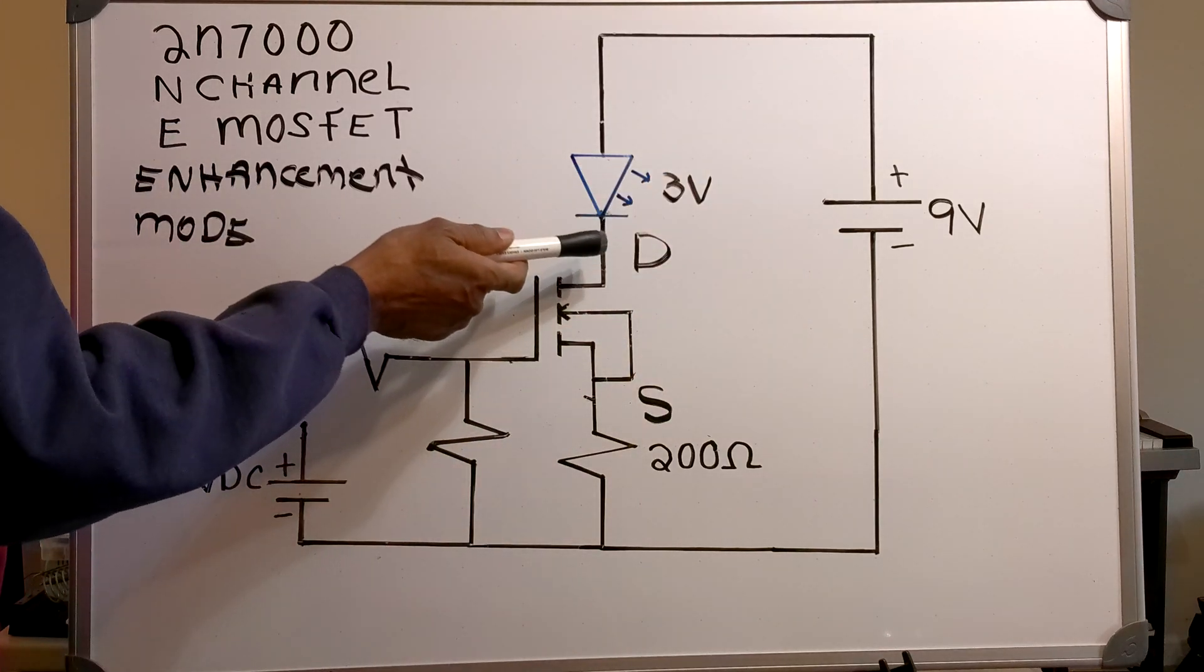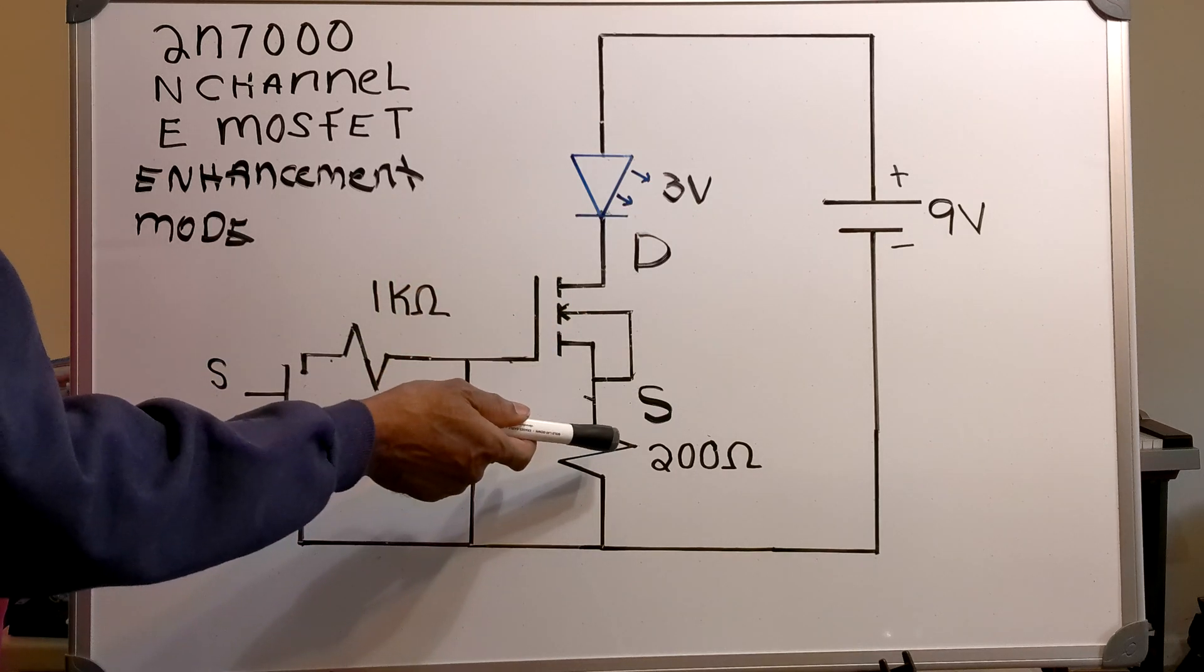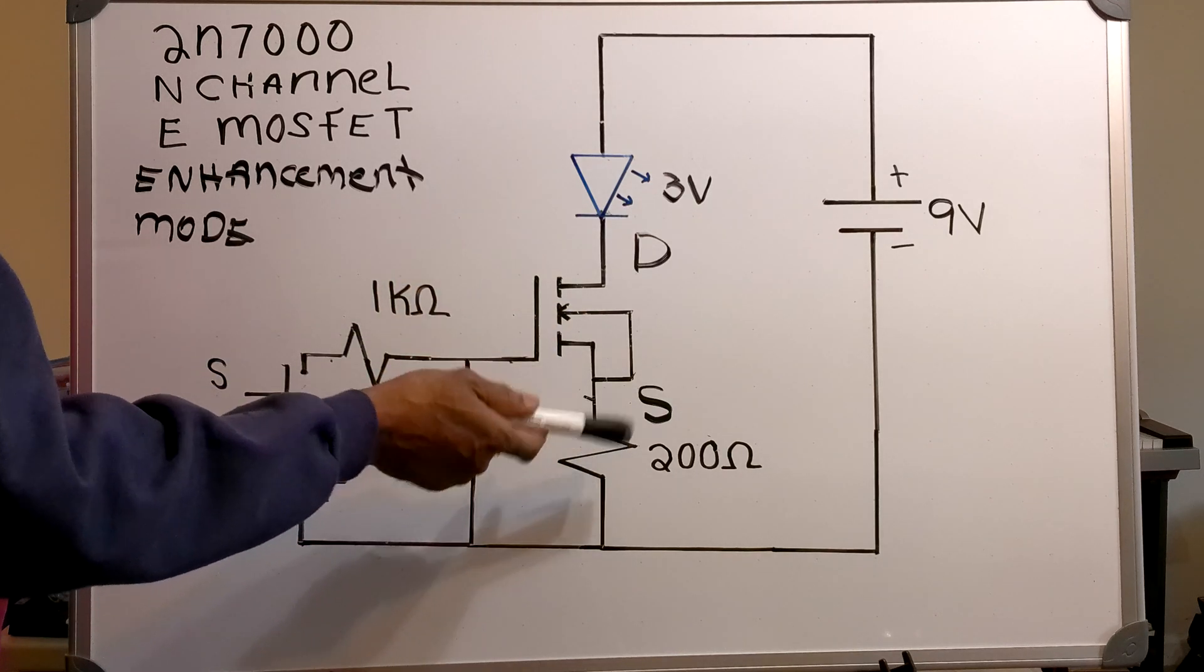On the drain side, I've got a 3V LED. On the source side, I've got a 200 ohm resistor.